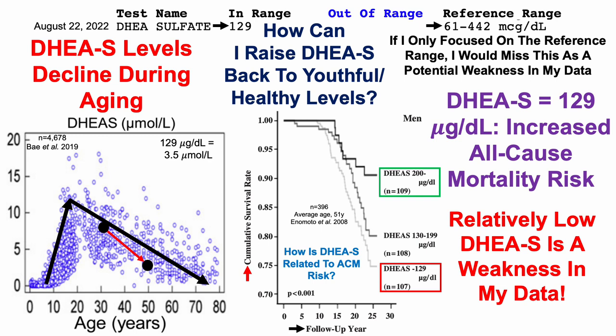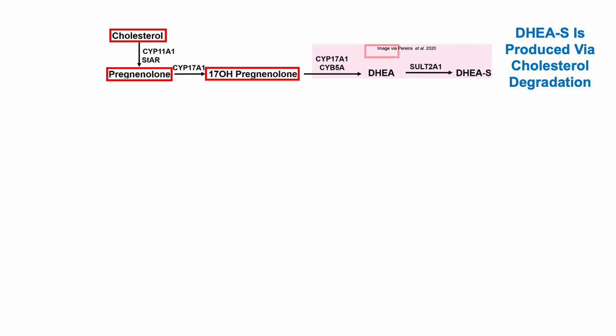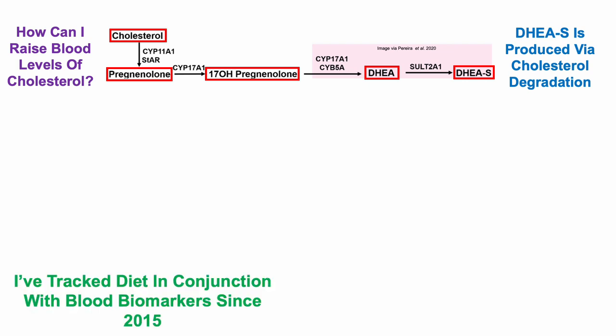How can I raise DHEA sulfate back to youthful and/or healthy levels? DHEA sulfate is produced by cholesterol degradation. Starting with cholesterol, that's converted into pregnenolone, which is hydroxylated into 17-hydroxypregnenolone, which is then converted into DHEA, and then DHEA is sulfated to form DHEA sulfate. So to me, it made the most sense to raise blood levels of cholesterol, since that's degraded to form DHEA sulfate — I'd expect that my levels of DHEA sulfate would then increase.